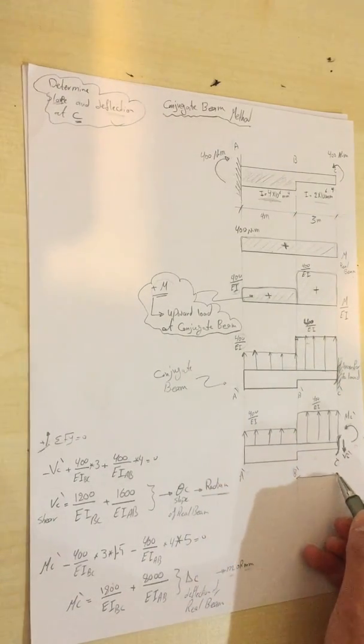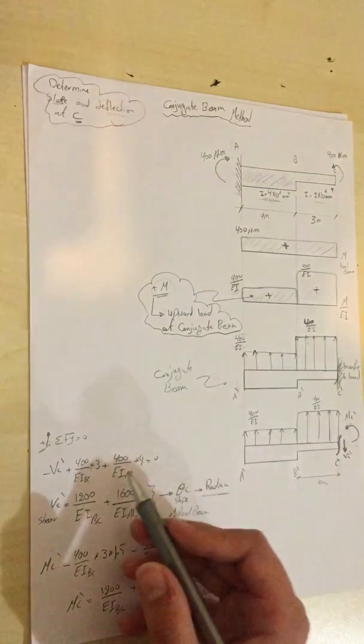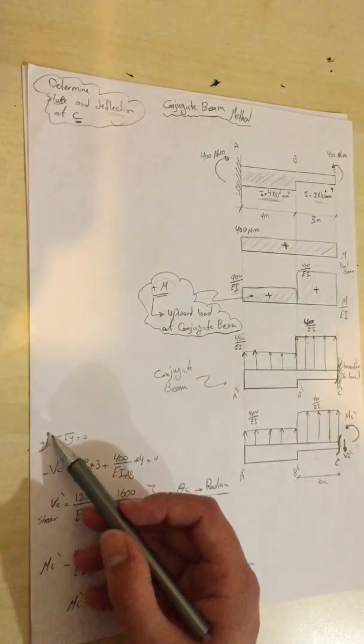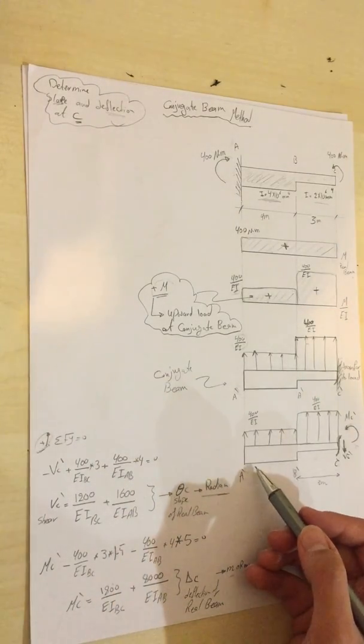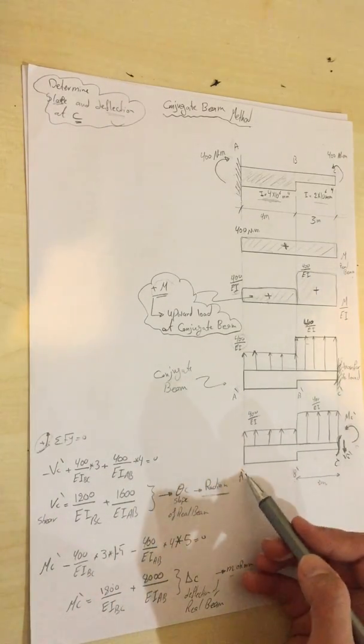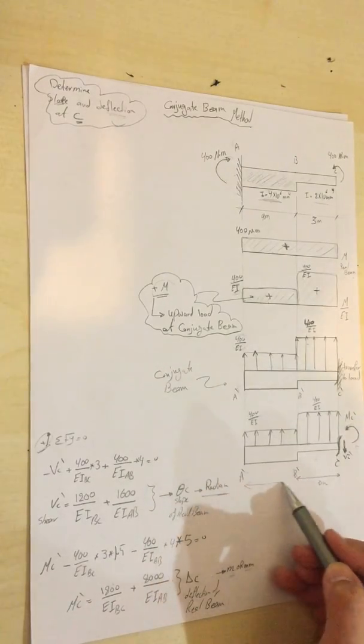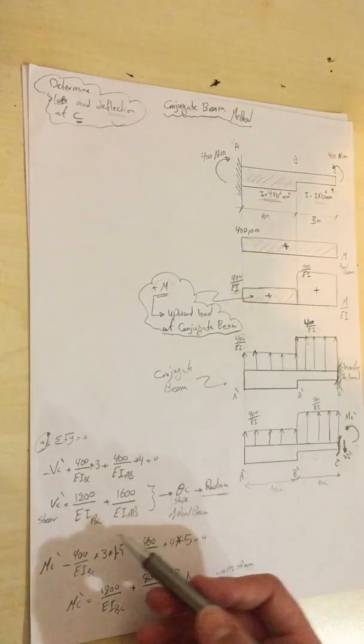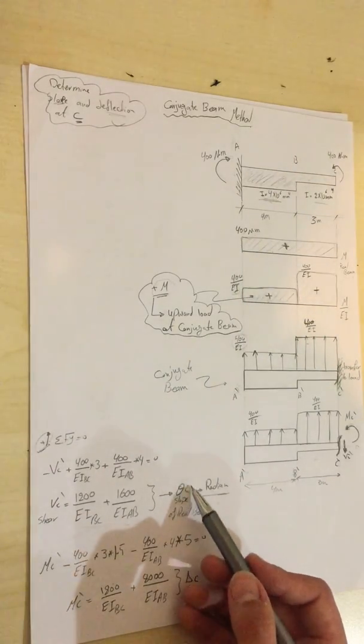Plus, because it's acting upward as our assumption, plus 400 divided by EI of segment AB times 4, because it's 4 meters length. By calculator we will get this, which will give us the slope of the real beam.